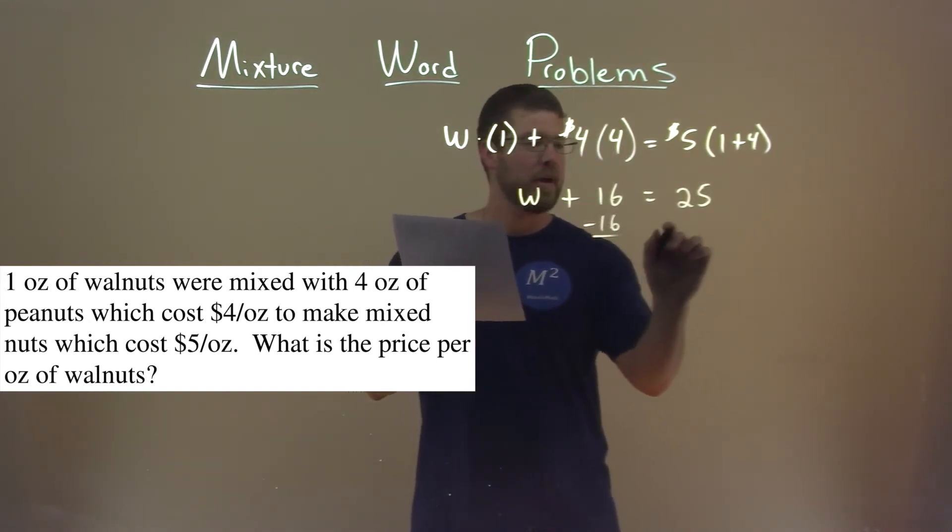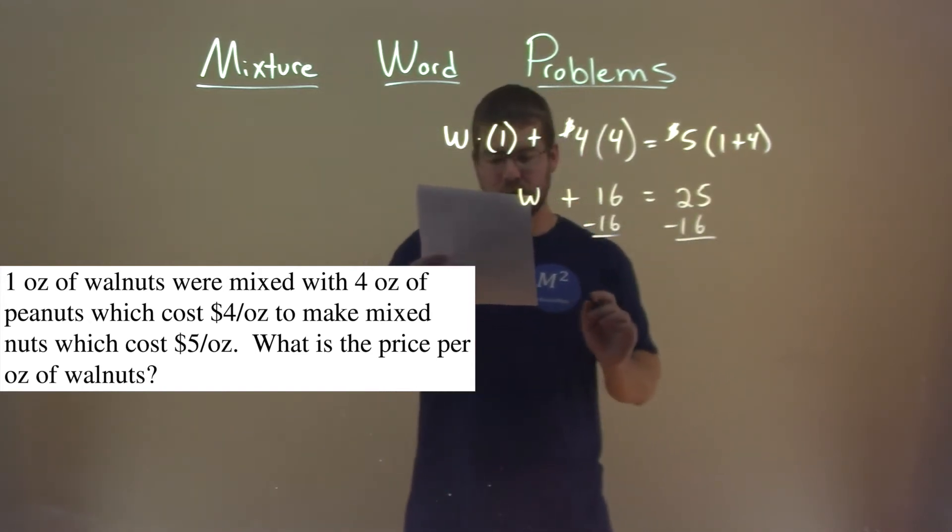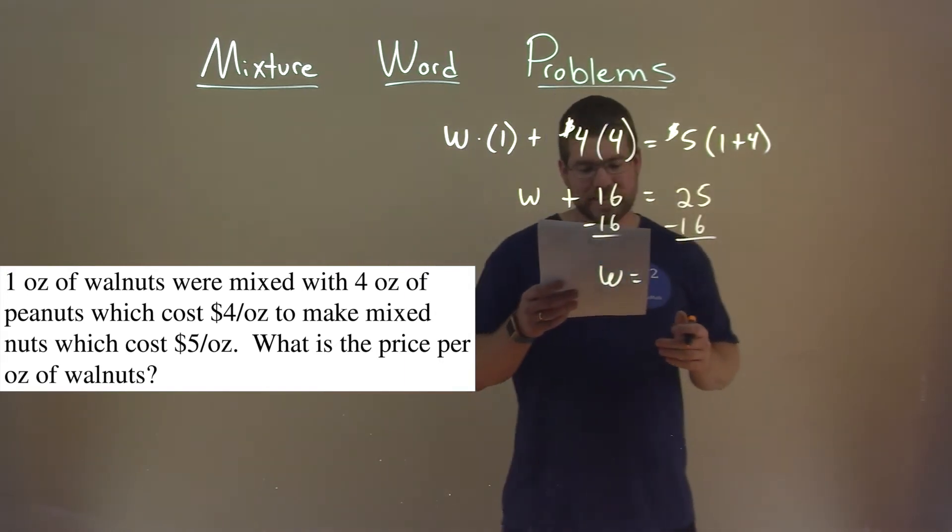Subtract the 16 to both sides. This actually gets pretty easy pretty quickly. W is left by itself, and 25 minus 16 is 9.